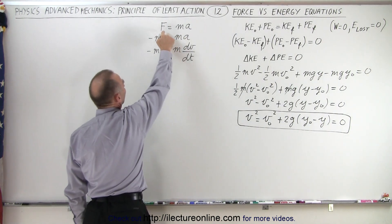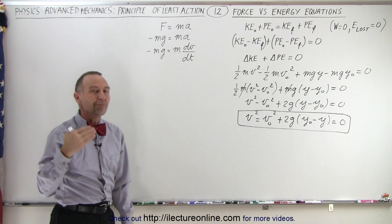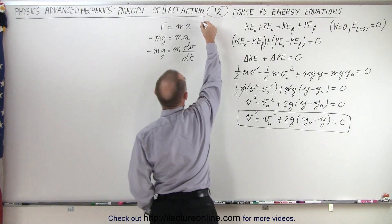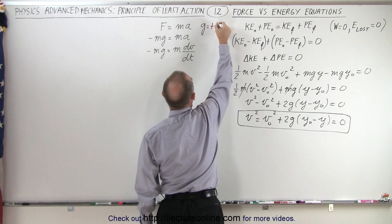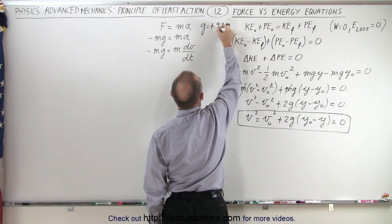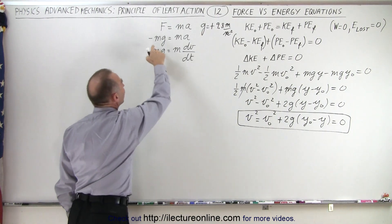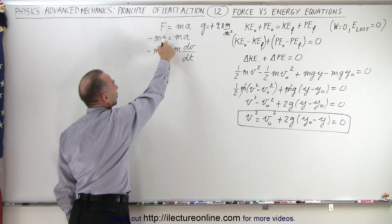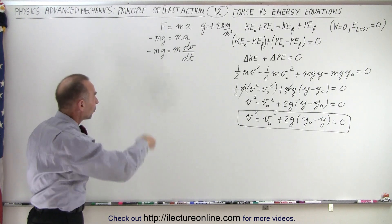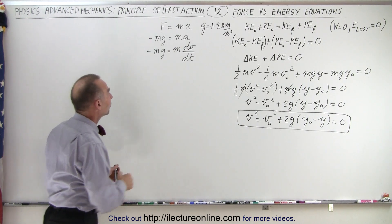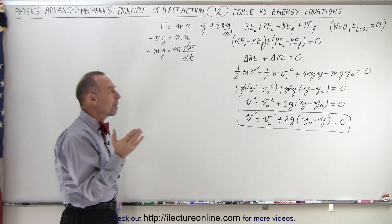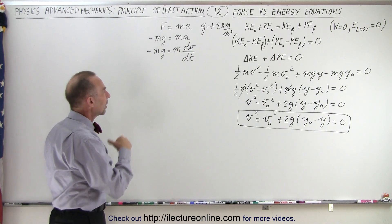Now we do the same using F equals MA. The force due to gravity is minus MG — the force is downward, and we let G equal a positive 9.8 meters per second squared, so the negative sign is necessary because G is a positive quantity, meaning the force acts in a negative direction. Acceleration A can be written as dV/dt, so we want an equation describing the velocity.